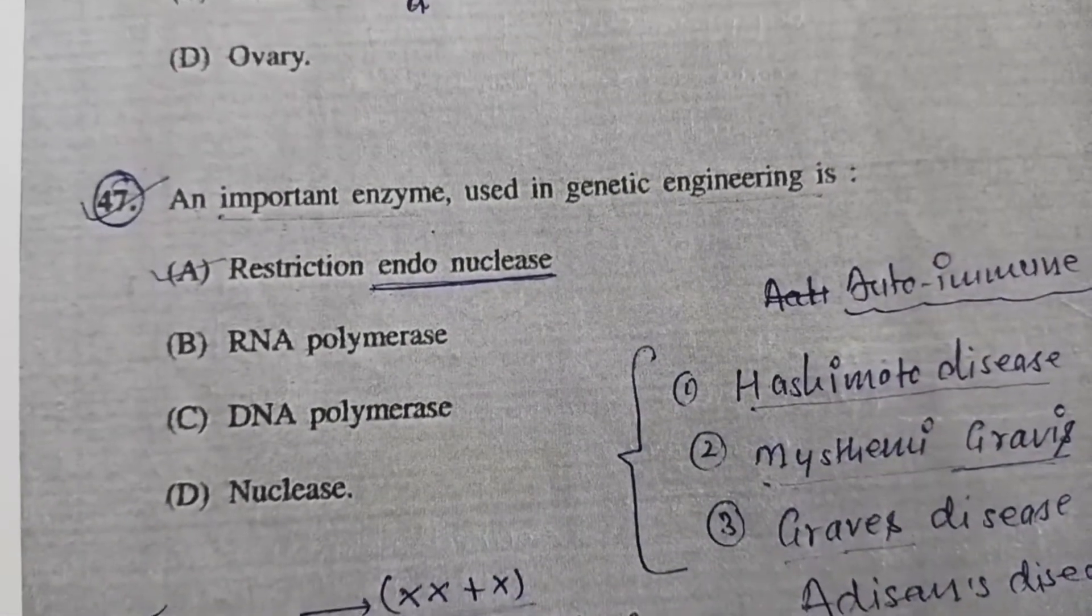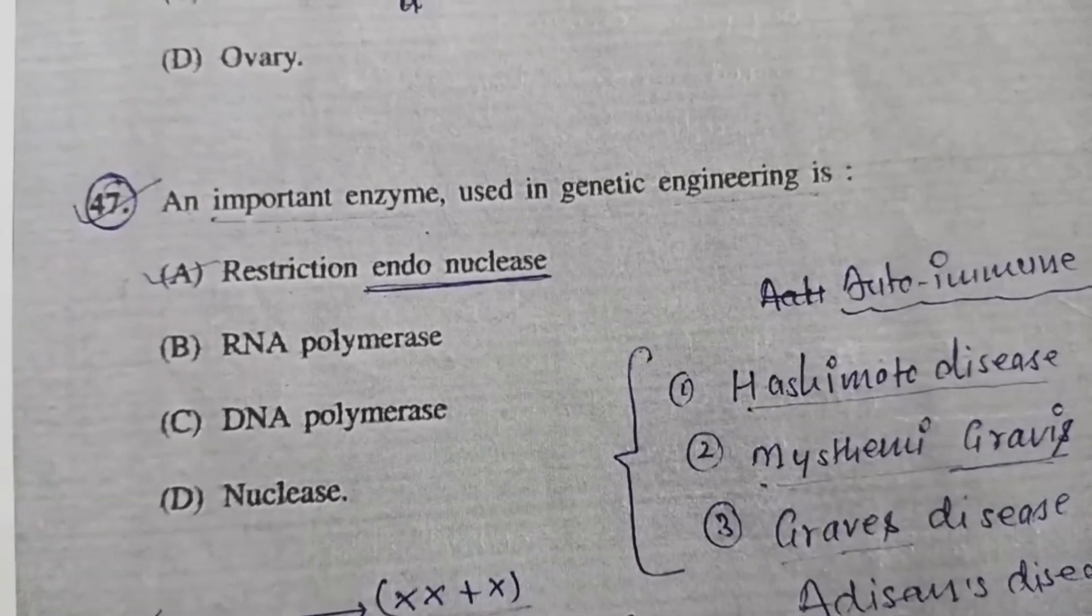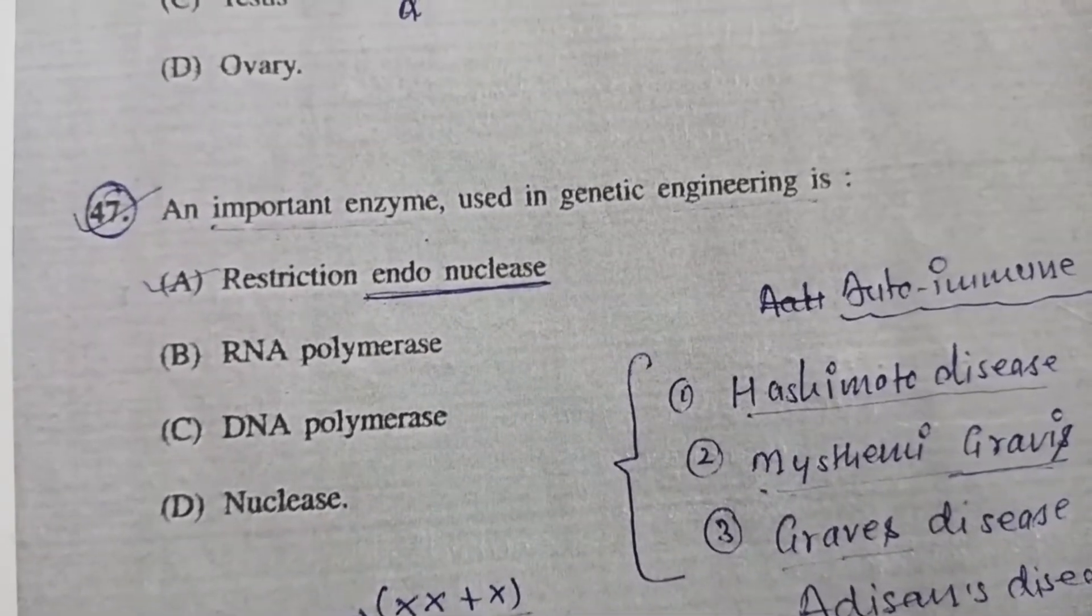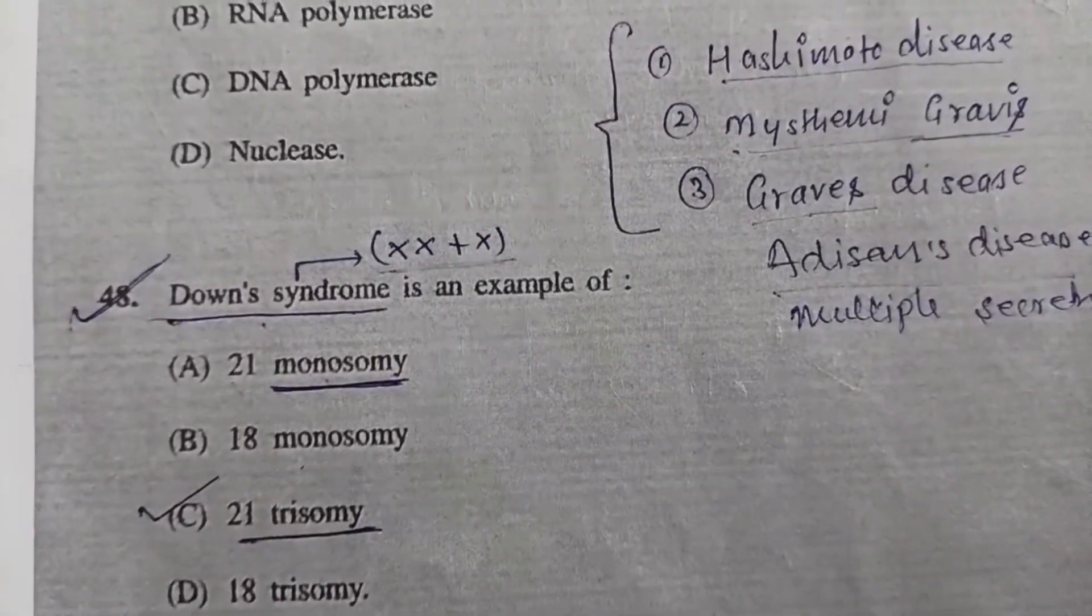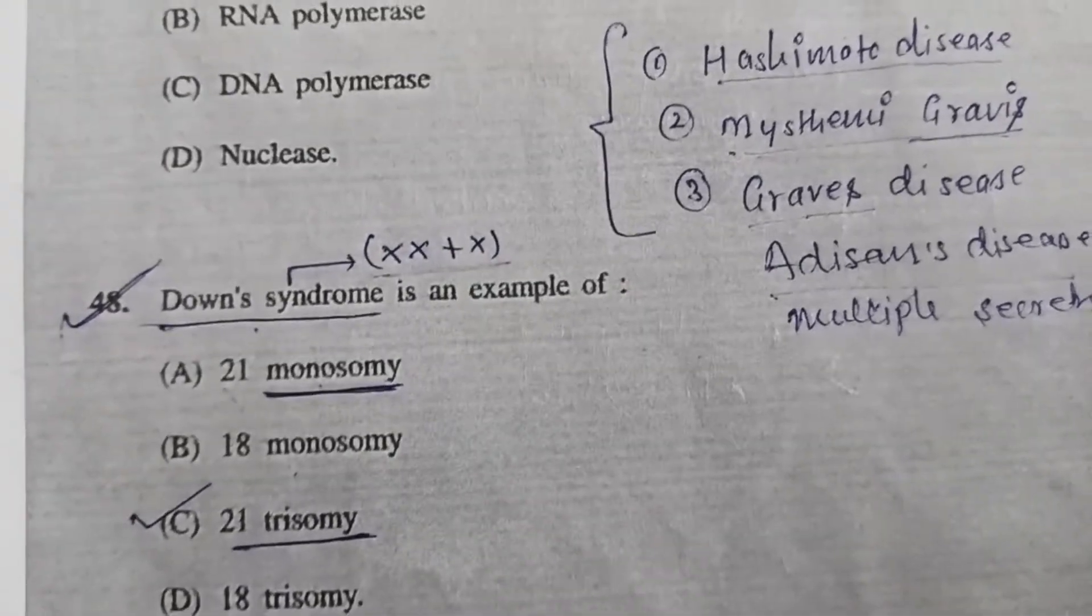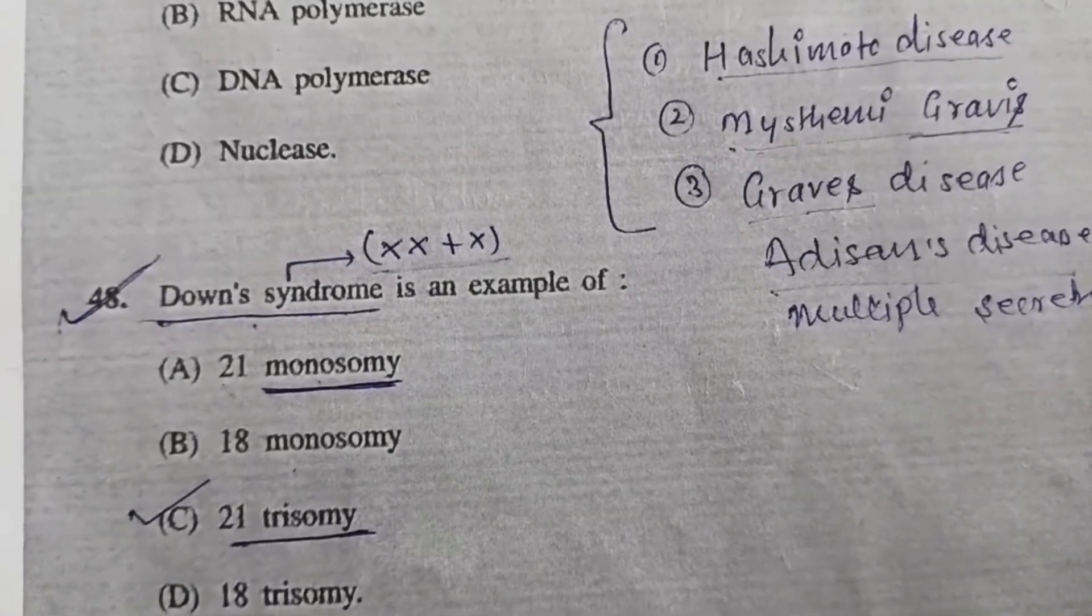Question 47: An important enzyme used in genetic engineering is - Option A, restriction endonuclease. Question 48: Down syndrome is an example of - C, 21 trisomy.